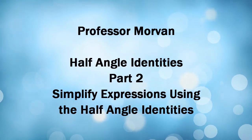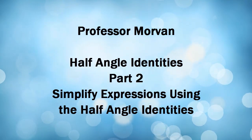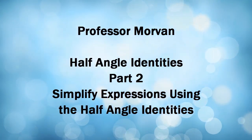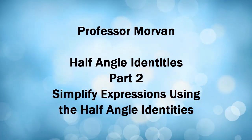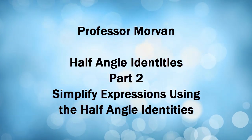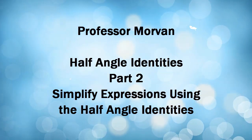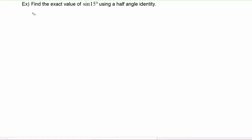In part two of our lesson on half angle identities, you will learn how to simplify expressions using the half angle identities. In this first example, we have to find the exact value of the sine of 15 degrees using a half angle identity.